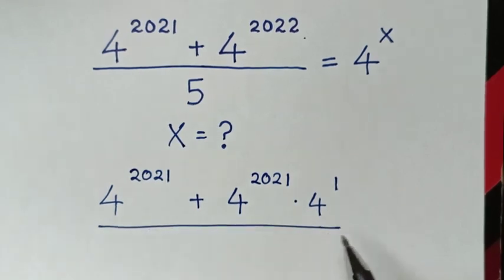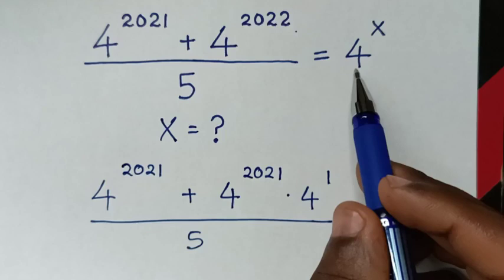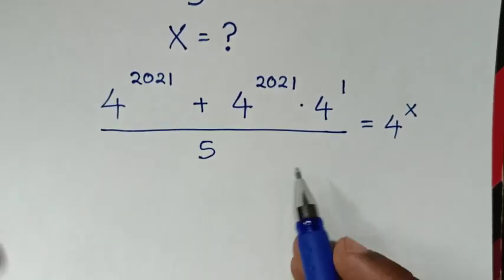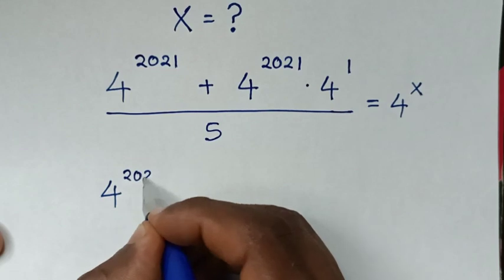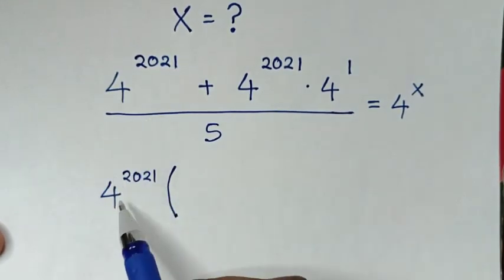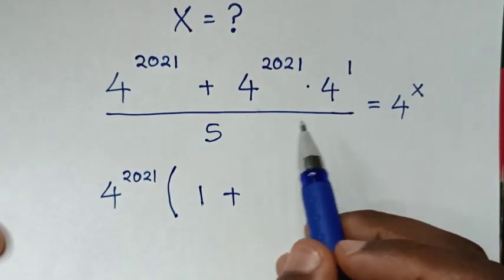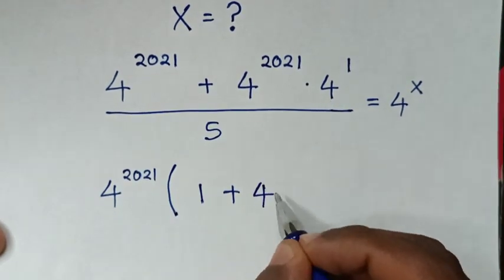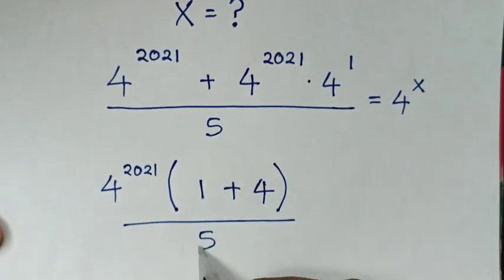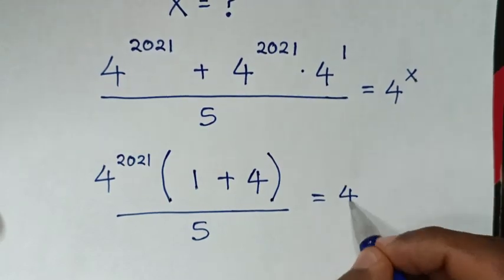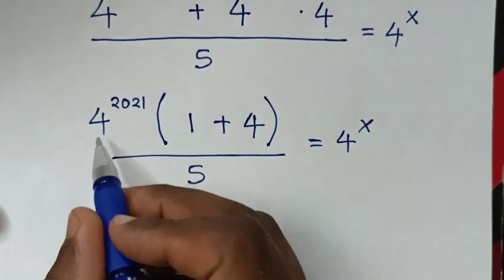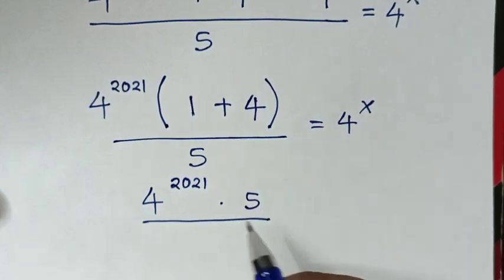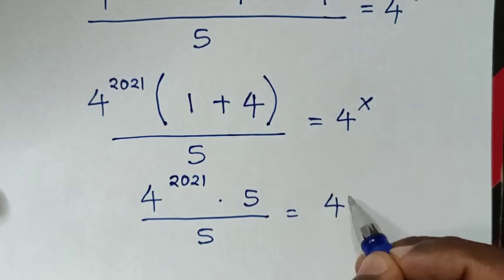Then over 5 is equal to 4 power of x. In the next step, 4 power of 20,21 is common, so take 4 power of 20,21 out of the bracket. Then 4 power of 20,21 divided by 4 power of 20,21 is 1, plus 4 power of 1, whereas 4 power of 1 is same as 4. So the bracket gives (1 + 4) = 5, over 5, equals 4 power of 20,21 times 5, over 5, equals 4 power of x.